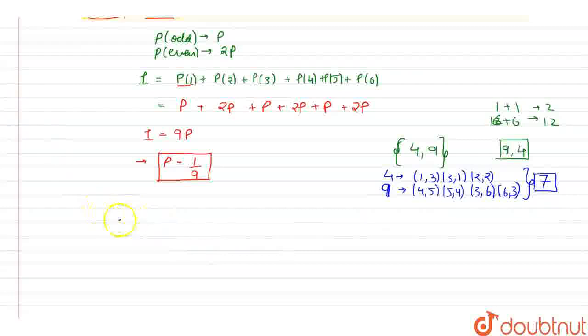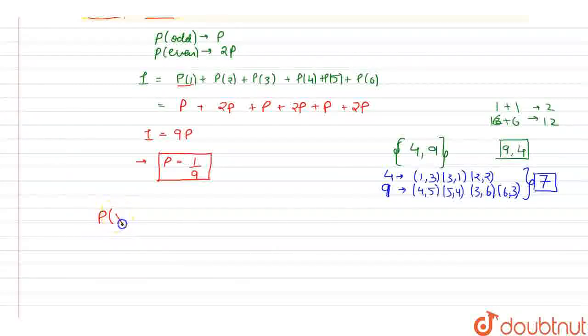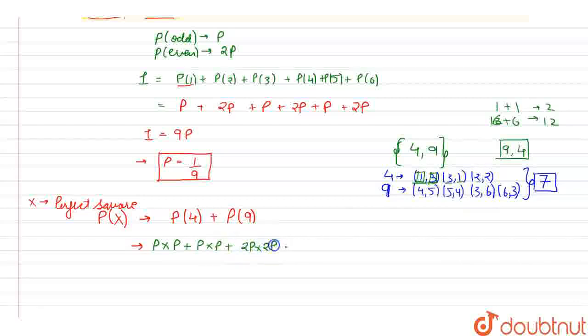Now we will find the probability of this. The probability that a perfect square appears, let it be P(X), where X is an event for perfect square. P(X) will be the probability that sum will be 4 plus the probability that sum will be equal to 9. For 4, we have already discussed the cases, that is 1,3. The probability that 1 will occur on first die will be p, multiplied with probability of 3, which is also an odd number, so it will be p. Similarly for 3,1 it will again be p×p. For 2,2 it will be 2p multiplied with 2p as they are even numbers.